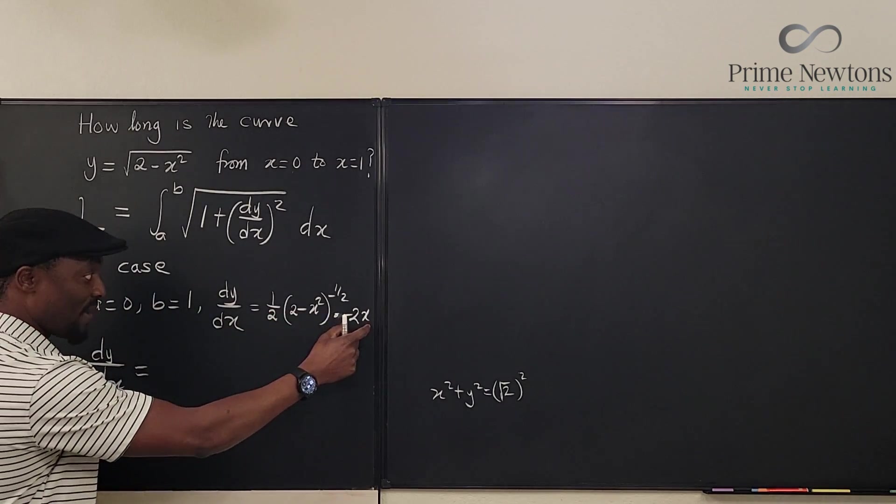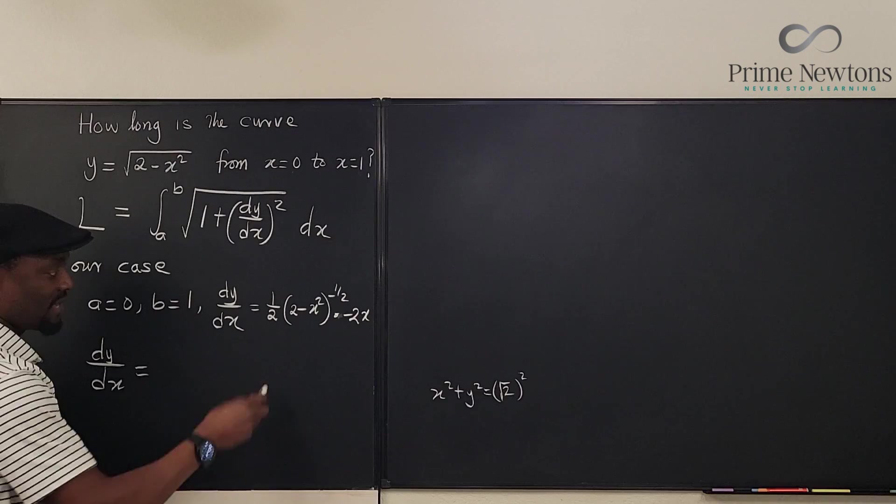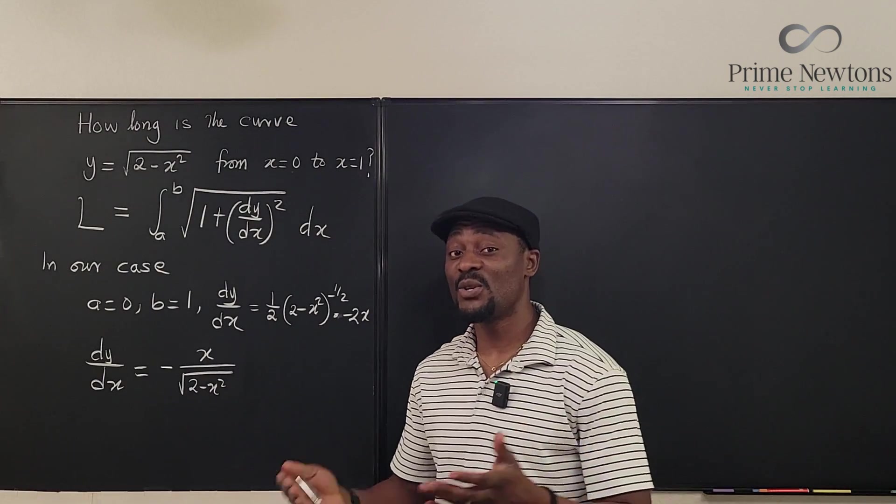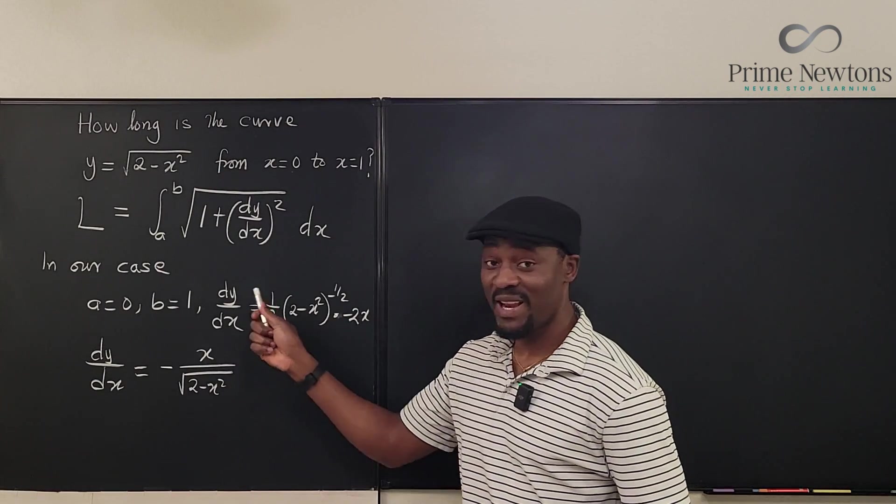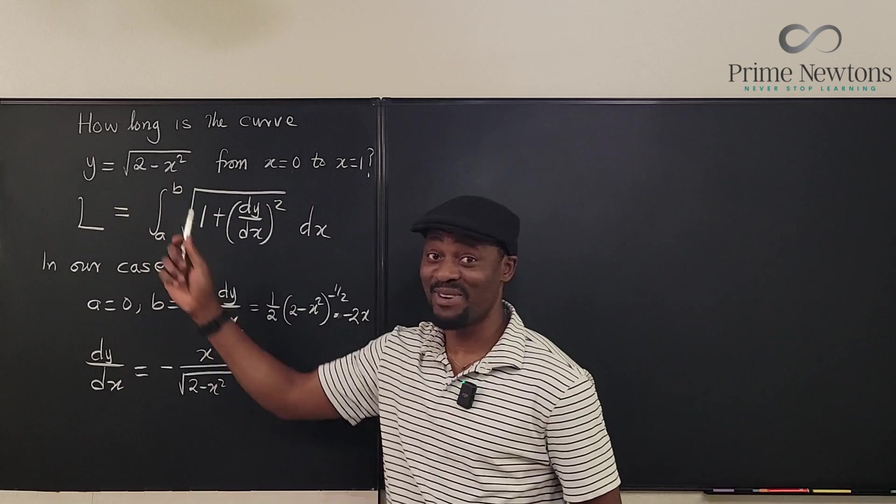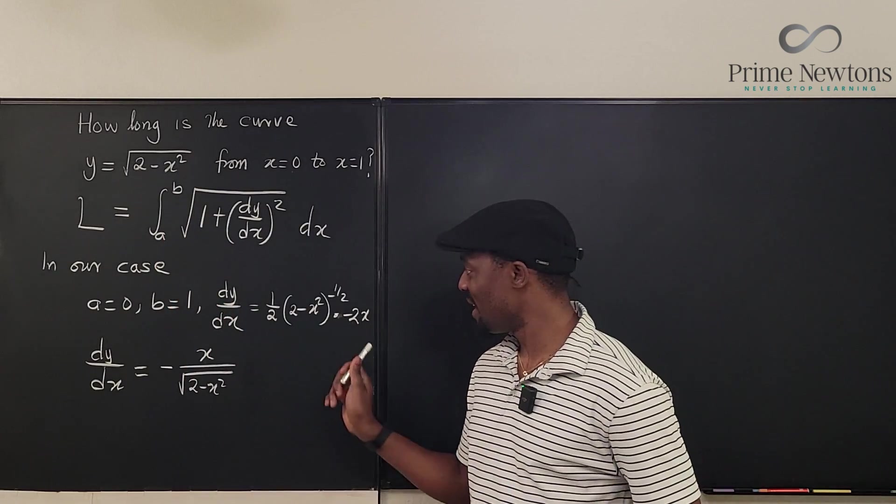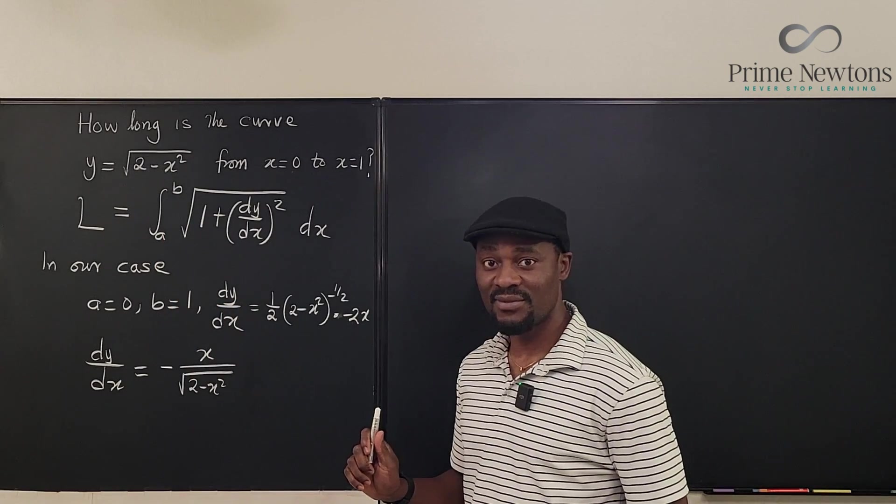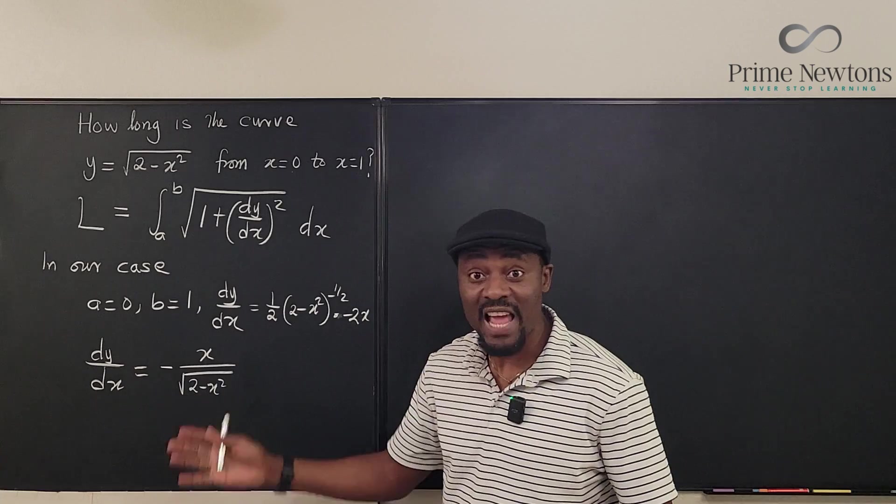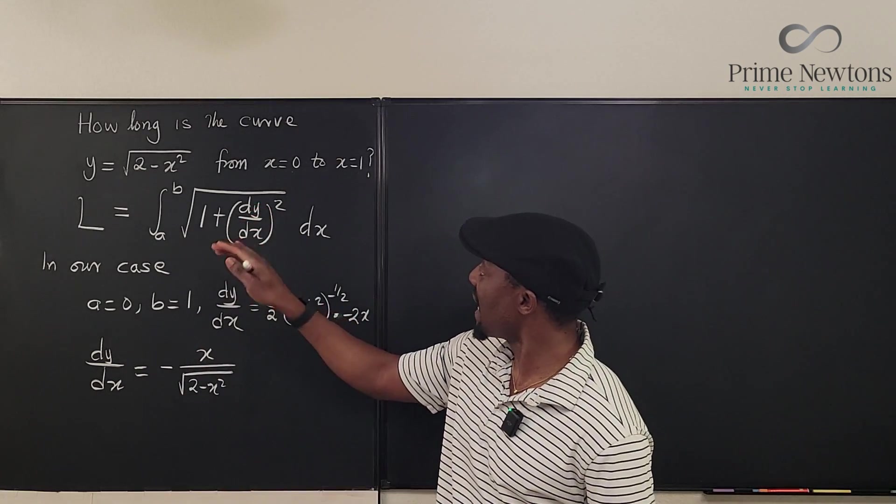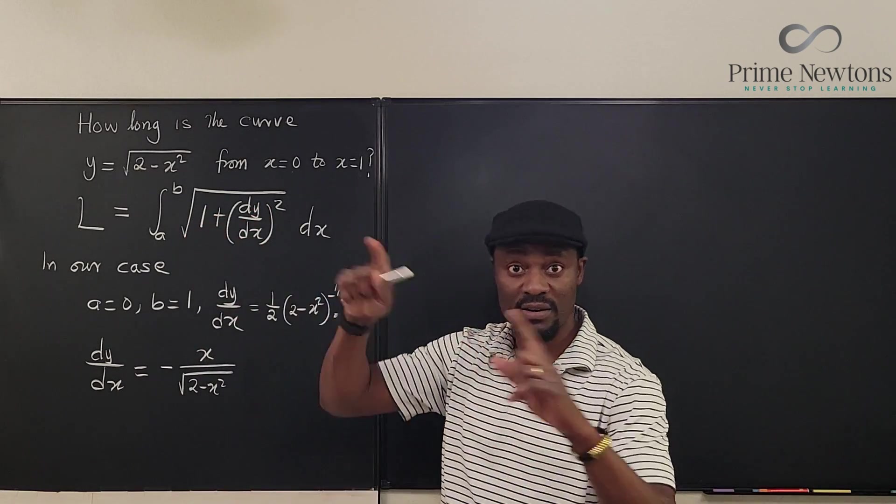So what we have is -2x. Let's rewrite this. By the way, if you're taking calculus 2, I shouldn't be explaining how to take dy/dx of this one. dy/dx is the chain rule, and this is what happens. So now we've gotten everything we need. We just need to plug it into this formula and find the length of the arc.